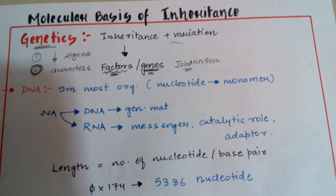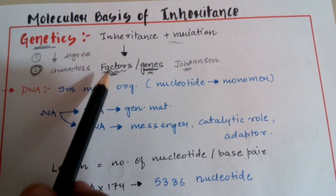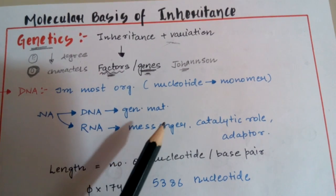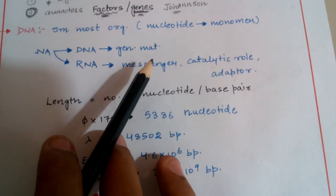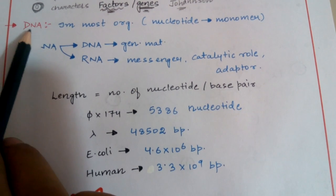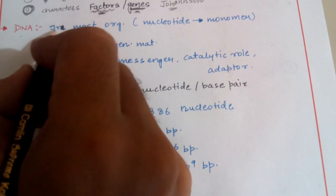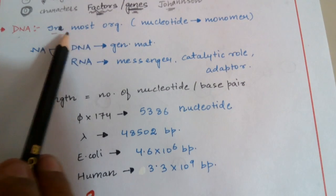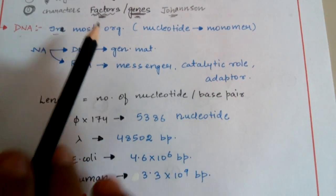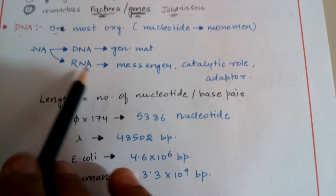So factors in Mendel's language and genes in modern terms given by Johansson are the same thing. The most appropriate genetic material is DNA, since DNA is present as genetic material in most organisms. DNA is more stable than RNA — we will discuss this a little bit later.